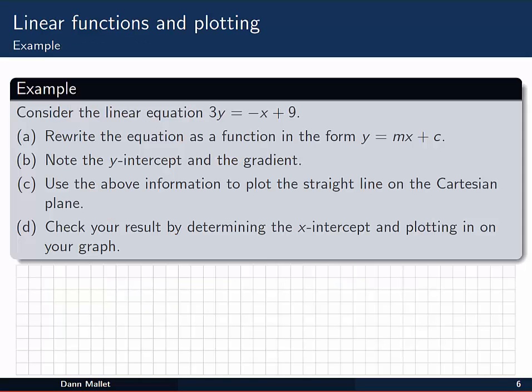Okay, so here's an example. We've got the linear equation 3y = -x + 9. And we want to rewrite that equation as a function in the form y(x) = mx + c. That's just a matter of rearranging things. We need to get rid of that 3 there. So we could write that y(x) is equal to, to get rid of it, divide both sides by 3. So we'd have -1/3 x, or x/3 if you like. And 9 divided by 3 is just 3. So there's our linear function.